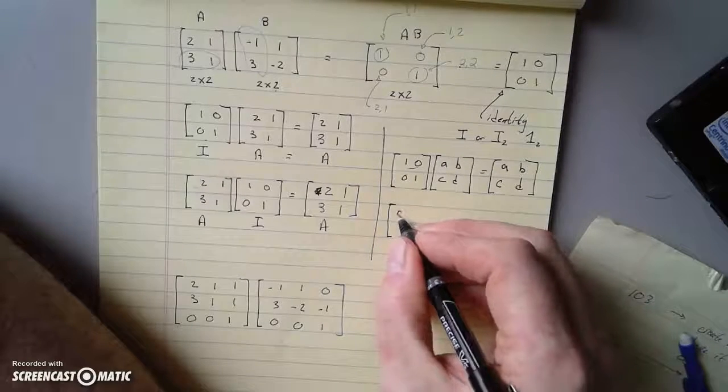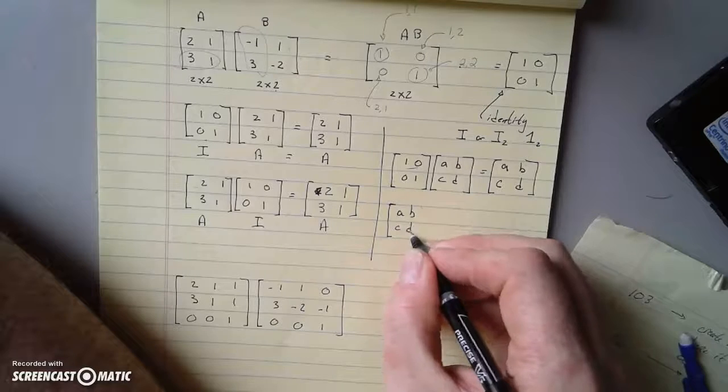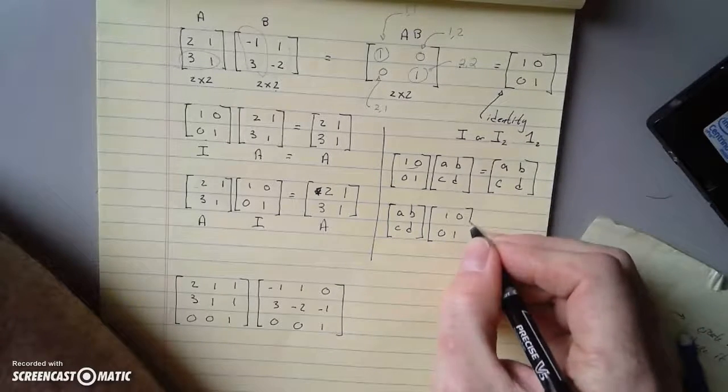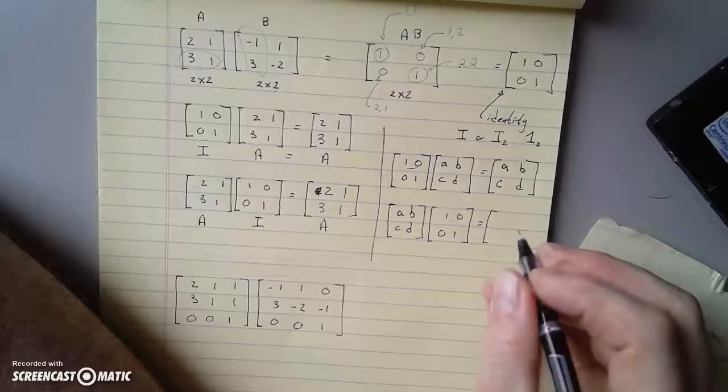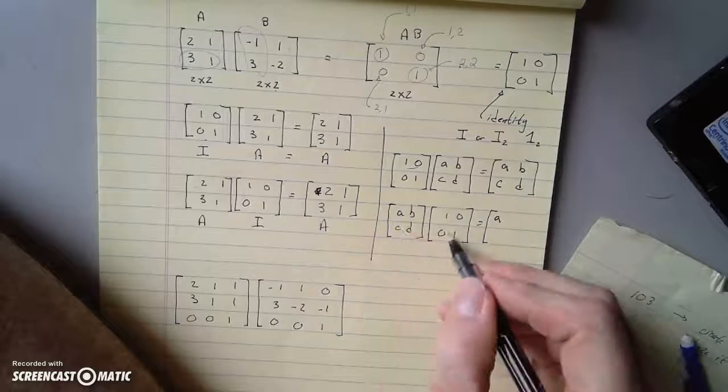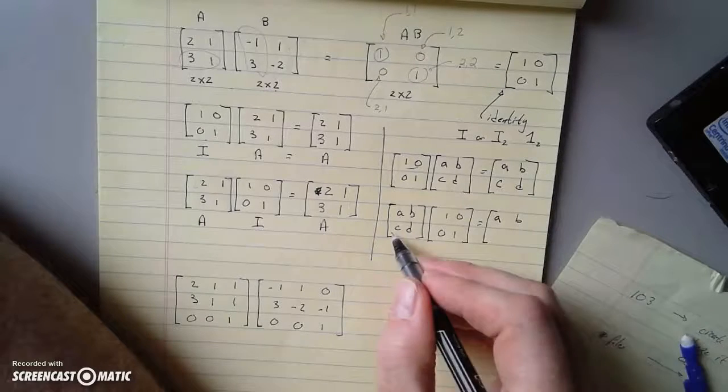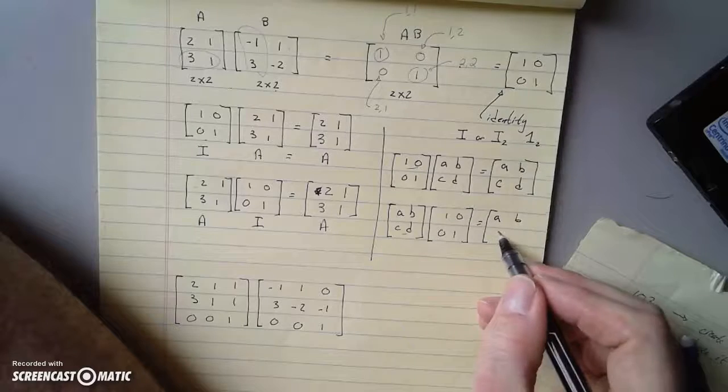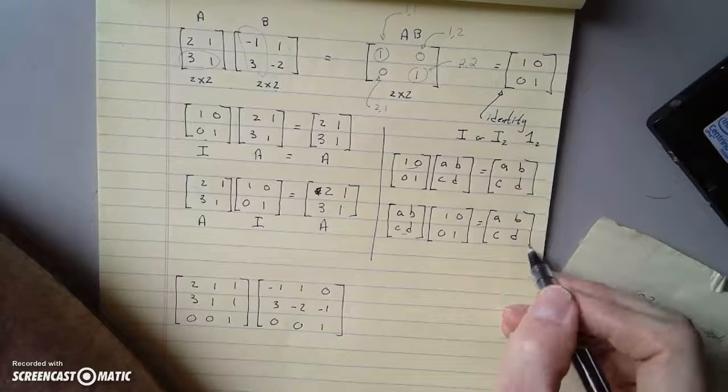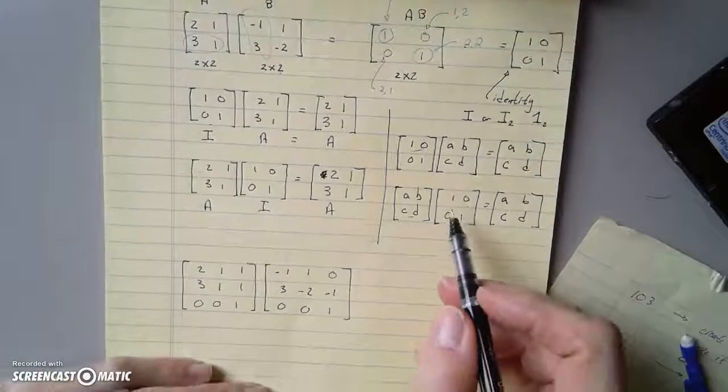Does the order matter? Let's try it. A, B, C, D times 1, 0, 0, 1. First row, first column, A. First row, second column, B. Second row, first column, C. Second row, second column, D.